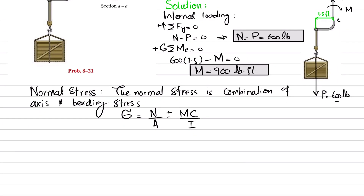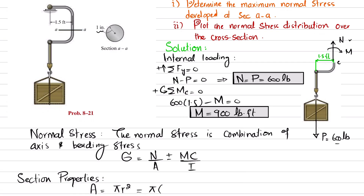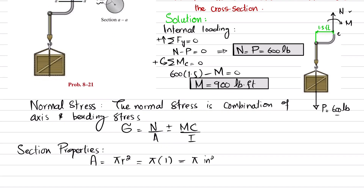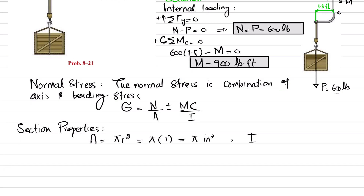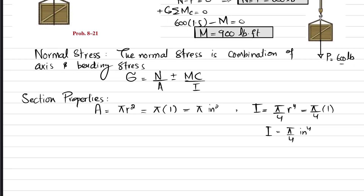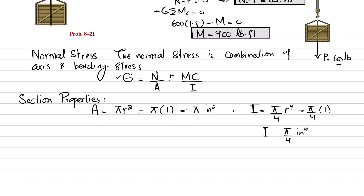Now we will find the section properties. First, the area: for a circular shape, area equals pi times r squared. With radius r equal to one inch, area equals pi square inches. Second, the moment of inertia for a circular rod is pi over 4 times r to the power 4. With r equal to 1, I equals pi over 4 inches to the power 4.